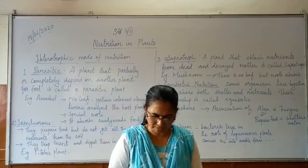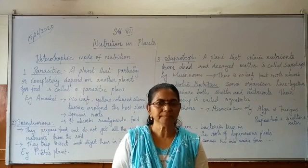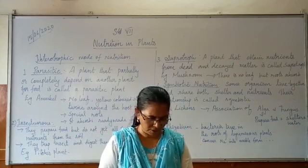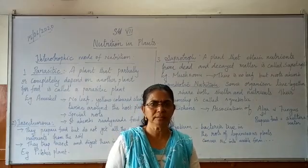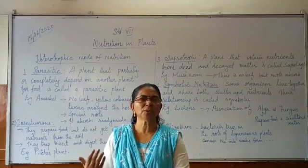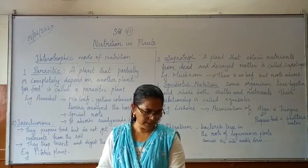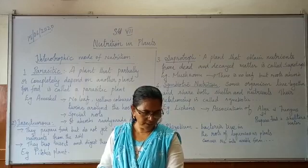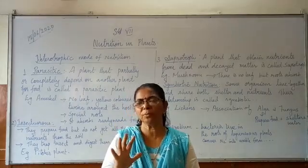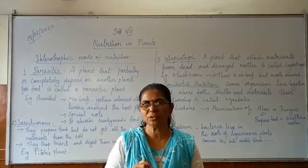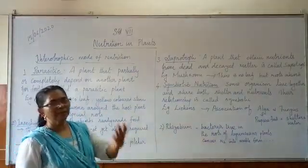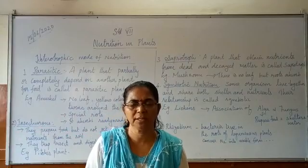The assignment for this part is: first one, differentiate autotrophic and heterotrophic mode of nutrition. Number two, write a short note on insectivorous plants. Number three, cuscuta is a parasitic plant - explain. You can take the notebook and write these answers and submit afterwards. Thank you.